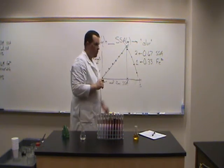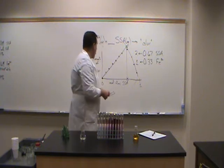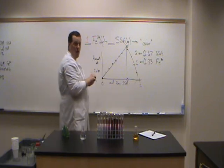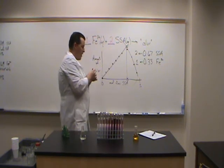Or 1 to 2. So for every one iron that reacts, I get two SSAs that react.